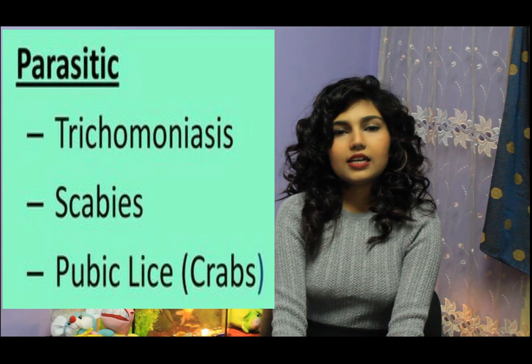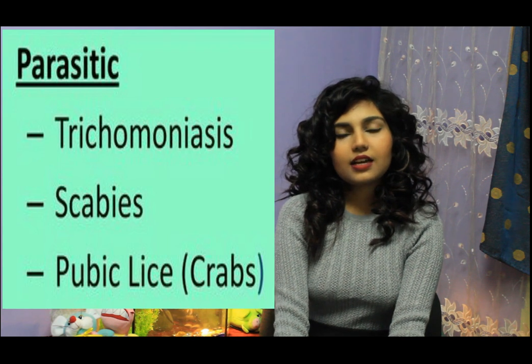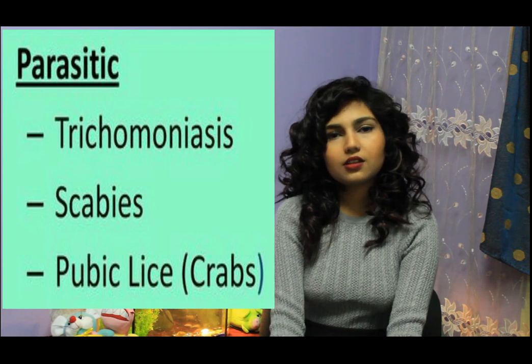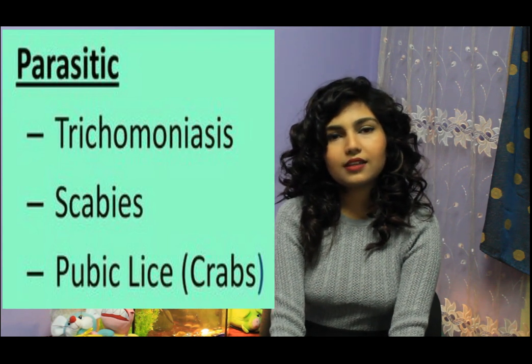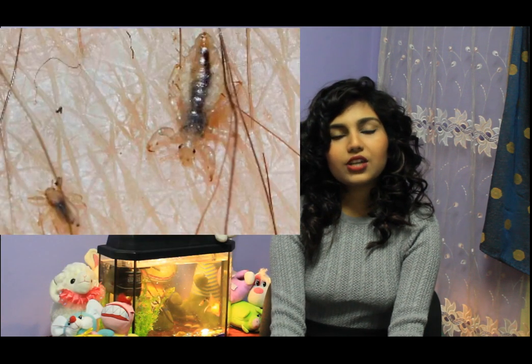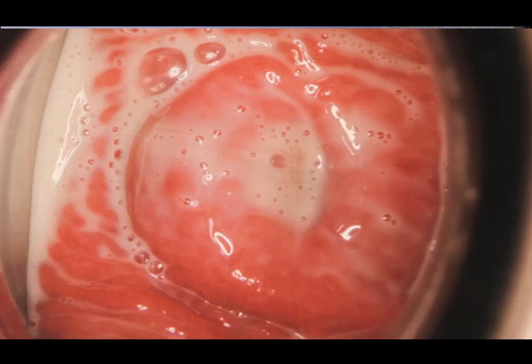We'll be talking about types of STIs. The first is parasitic. In the parasitic type, a patient generally complains of pubic lice, which can be really itchy. The second one is trichomoniasis, in which there can be a discharge from the genital, which can also be really itchy.